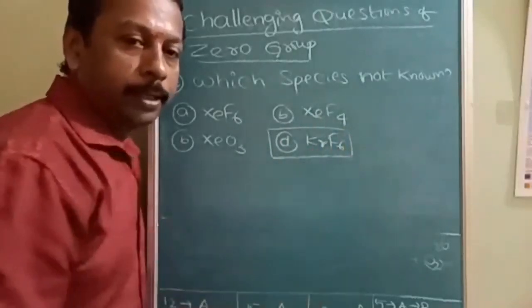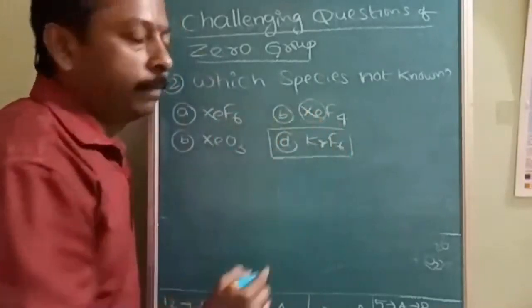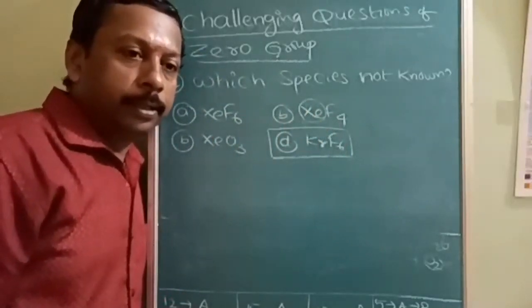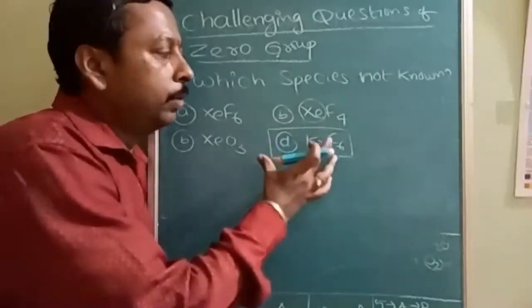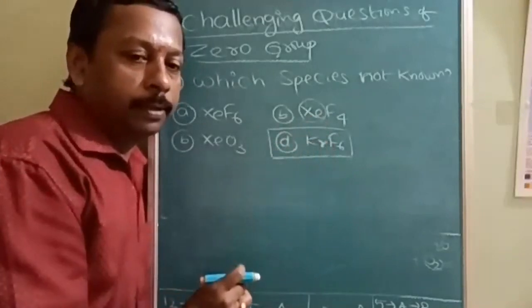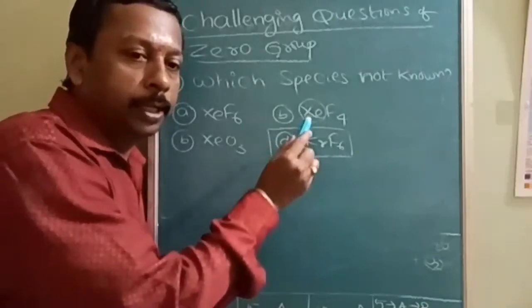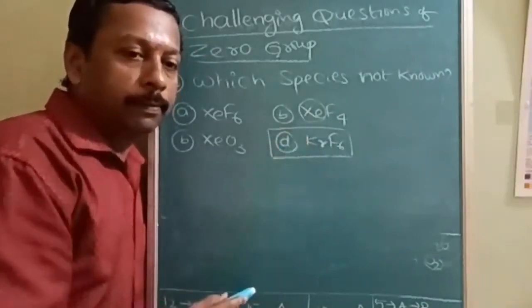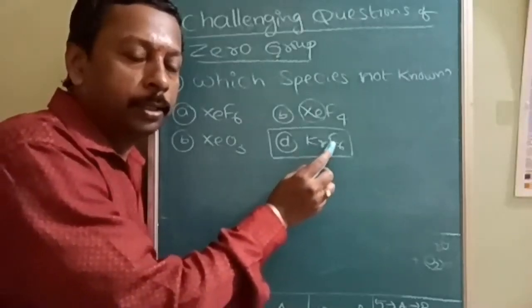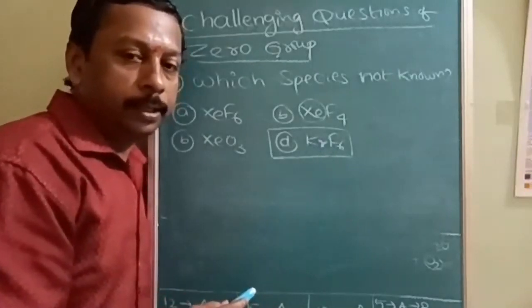Xenon being the lower part, after that radon will come but that is radioactive. So lowest element in the inert gases which is non-radioactive is xenon. Down the group ionization energy decreases, so lowest ionization energy is xenon, so only compounds of xenon are known. Hence, krypton cannot lose the electron, cannot share the electron even with fluoride because of its high ionization energy, hence KrF6 does not exist.